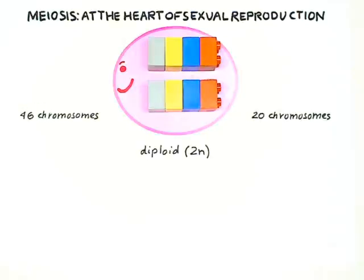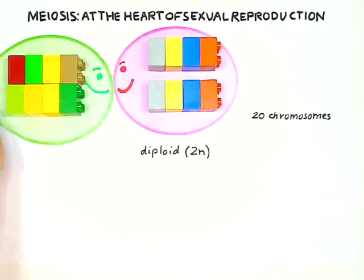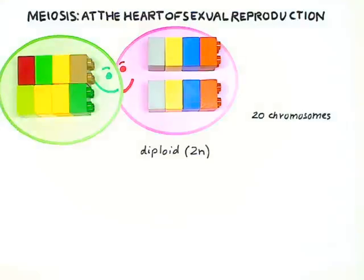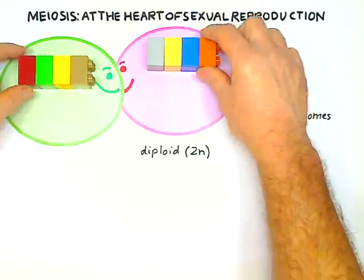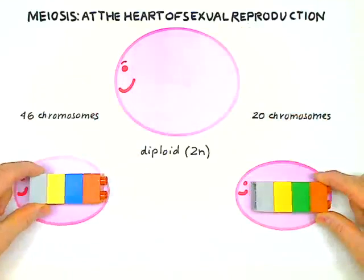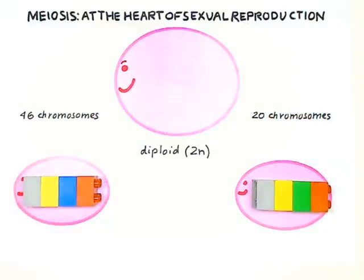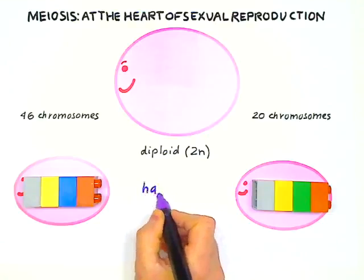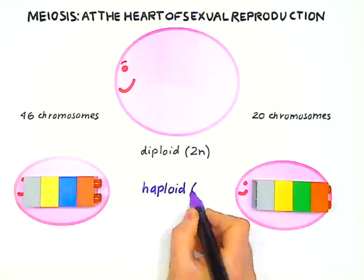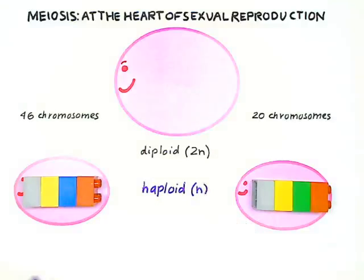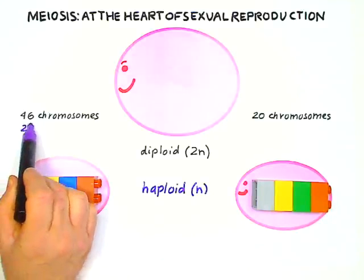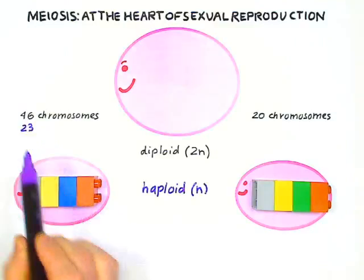If Plastigo is to reproduce sexually, it needs to meet a partner to make babies with, but that's not enough. Each parent Plastigo must only contribute one chromosome to the new cell they'll create together. Each parent's cell thus needs to divide, and the two chromosomes must be separated. This type of division is called meiosis, and it generates reproductive cells that are said to be haploid and which contain 1n chromosomes. In humans, reproductive cells — sperm or eggs — contain 23 chromosomes. 1n is 23.